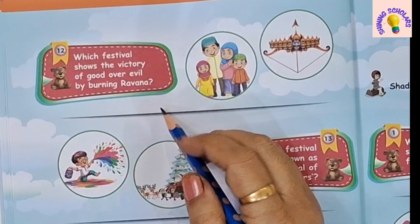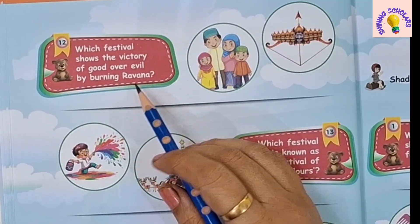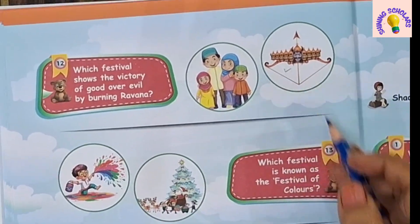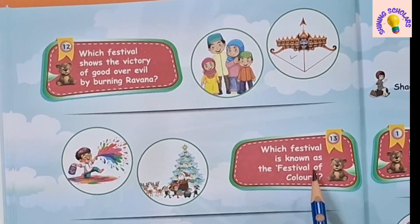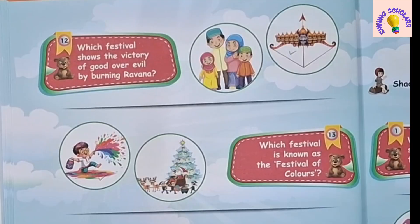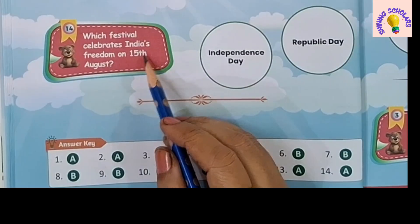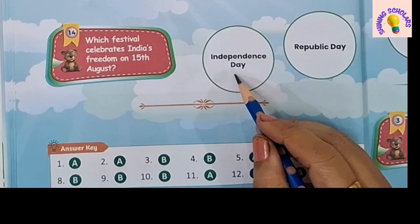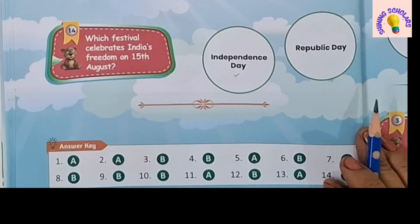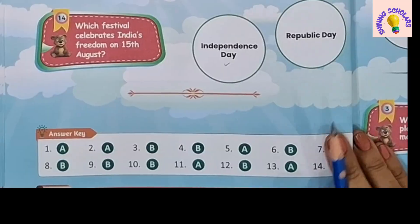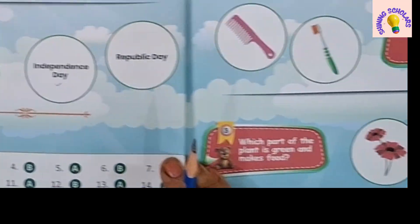Which festival shows the victory of good over evil by burning Ravana? Dussehra. Which festival is known as the festival of colors? Holi. Which festival celebrates India's freedom on 15th August? Independence Day. And this is the answer key — you can match your answers from here.